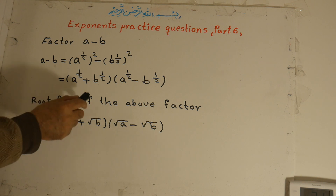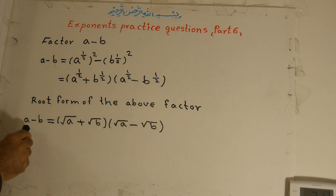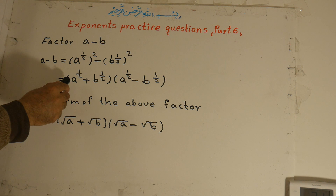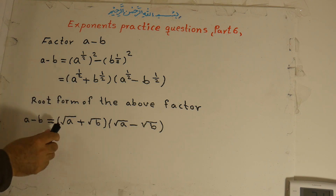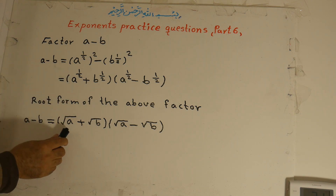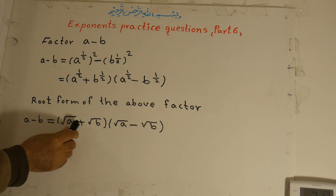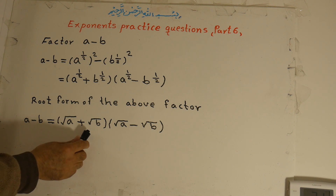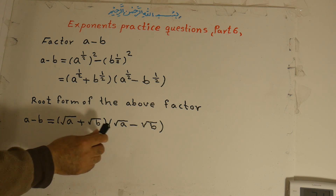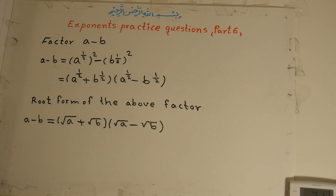The root form of this factorization: a minus b equals a to the power of one-half, meaning a under the square root, plus b under the square root, and the second factor is a under the square root minus b under the square root.